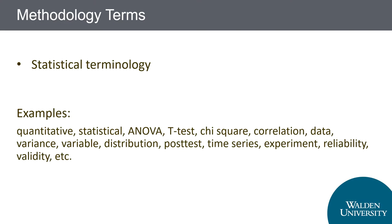For quantitative articles, that typically means statistical terminology, such as the statistical method used or terms related to data analysis. For example, a quantitative article may use terms like statistical, correlation, variance, distribution, or ANOVA.